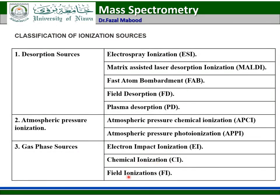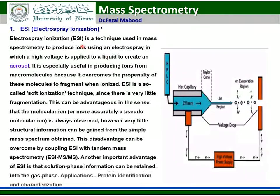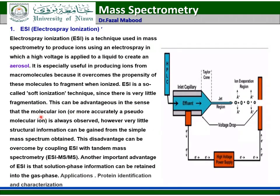Electrospray ionization (ESI) is a technique used in mass spectrometry to produce ions using a high voltage applied to a liquid to create an aerosol. It is especially useful for producing ions from macromolecules because it overcomes the propensity of these molecules to fragment when ionized. ESI is a so-called soft ionization technique since there is very little fragmentation. This can be advantageous because the molecular ion is always observed; however, very little structural information can be gained from the simple mass spectrum. This disadvantage can be overcome by coupling ESI with tandem mass spectrometry. Another important advantage of ESI is that solution phase information can be retained in the gas phase, with applications in protein identification and characterization.